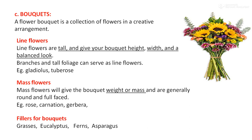Line flowers are tall and give the bouquet height, width, and a balanced look. Branches and tall foliage can serve as line flowers — for example, long-stock flowers like gladiolus and tuberose. Mass flowers give the bouquet its weight or mass — for example, rose, carnation, and gerbera are in the mass flower category.